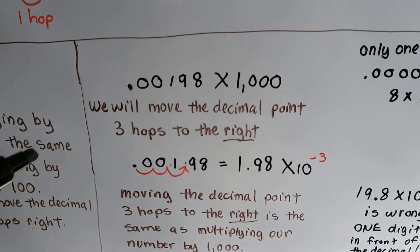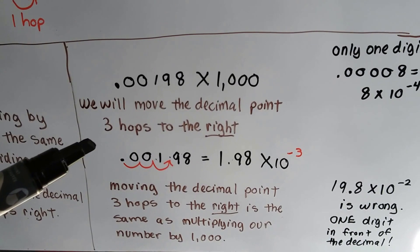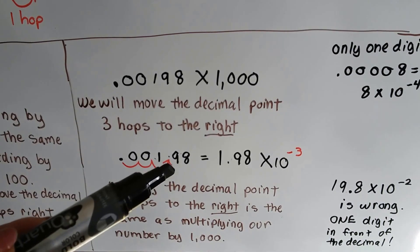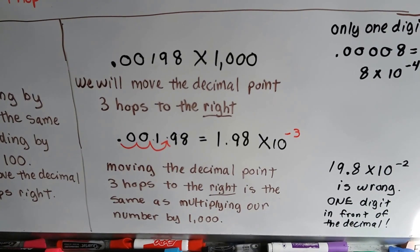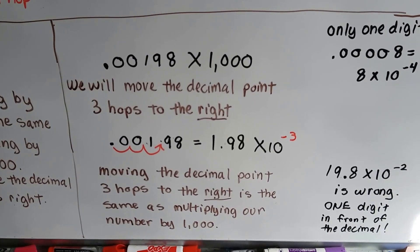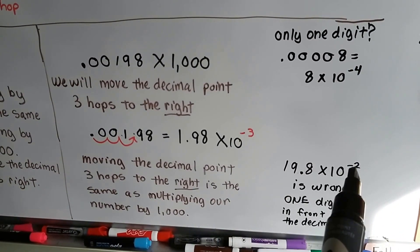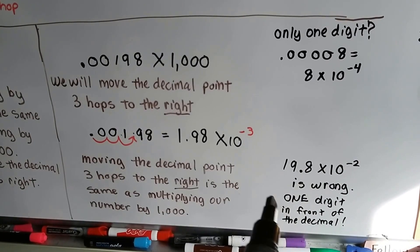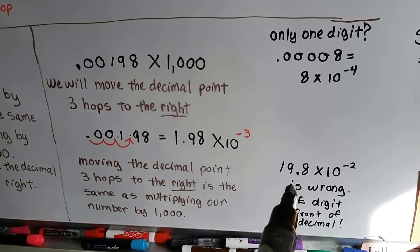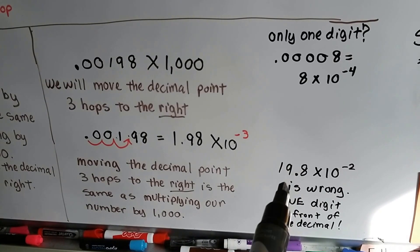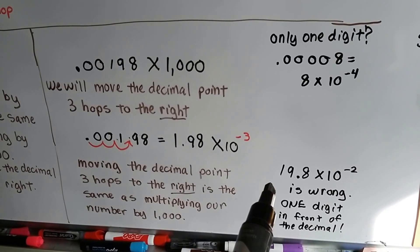Look at this one: 0.00198. If we multiply it by 1,000, it would be moving the decimal point three hops to the right — one, two, three — so it would be 1.98 times 10 to the negative third. Moving the decimal point three hops to the right is the same as multiplying our number by 1,000. Now, if you put 19.8 times 10 to the negative second power, it's wrong — there's got to be one digit in front of that decimal point, not two. That's why it would be less than 10. 19 is greater than 10, so it has to be less than 10, like 9.99, or greater than 1, like 1.01.